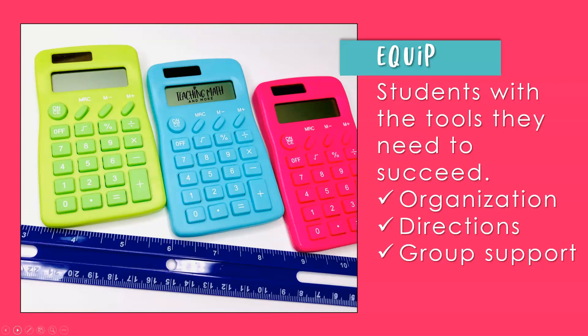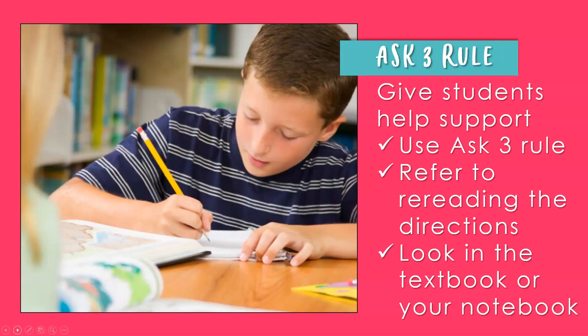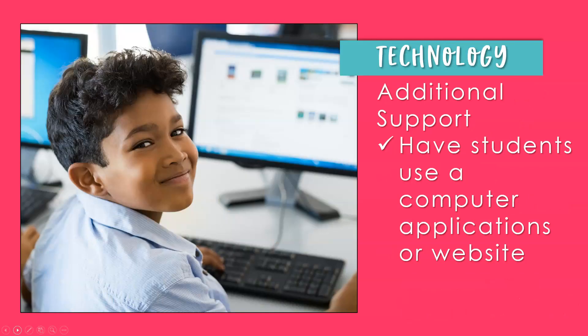Three, group support by teaching students the ask three rule. The ask three rule gives students the help and support that they need when they need it most. It's when students are told to ask three other classmates their question before coming to the teacher. Students can also be referred to rereading the directions, and another additional support is looking in their textbook or notebook for support — it's not cheating, it's a reference tool. Giving students technology is another great additional support. Have students use computer applications or websites. This is a math station that is generally overlooked, but it is key to filling in those gaps that your students will have in math.